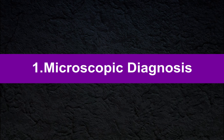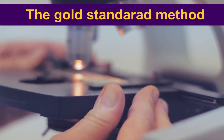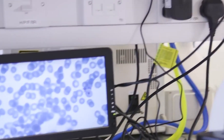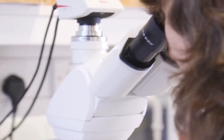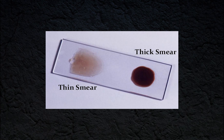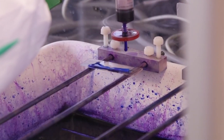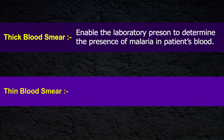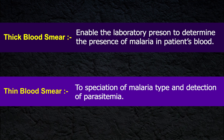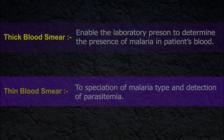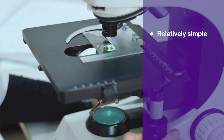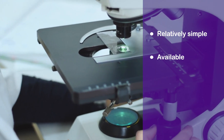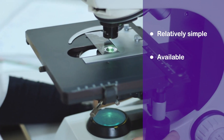The gold standard method for malaria confirmation is microscopic examination of thin and thick blood smears, stained with Romanowsky stains. The thick blood smear enables the laboratory person to determine the presence of malaria in patient blood, while the thin smear allows identification of the malaria species and detection of parasitemia. Blood film examination is relatively simple and available in medical laboratories as a routine hematological test.